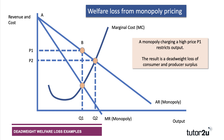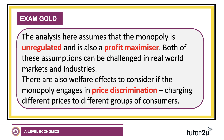The monopoly charging P1 restricts output, and the result is a deadweight loss of consumer and producer surplus. The producer surplus is pretty high because P1 lies well above the marginal cost curve. There's a little bit of consumer surplus left at P1B, but the deadweight loss of welfare — and this is the key bit — is area BCD. We really encourage you to show the welfare loss to get higher marks for analysis. The reason is because output is lower at Q1 than Q2, and the price is higher, leading to a deadweight loss of economic welfare.